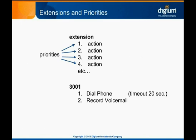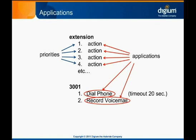An extension must have a valid priority 1 for Asterisk to recognize that it exists. The last dial plan construct we have to introduce is the application. Each action performed in the dial plan is handled by an Asterisk application. You can listen once more to the previous slide and think 'application' every time the word 'action' is said. Asterisk applications is a broad enough topic that it will get its own chapter following this one.